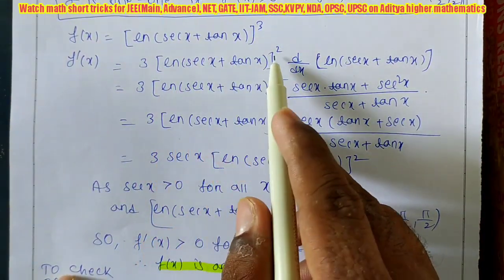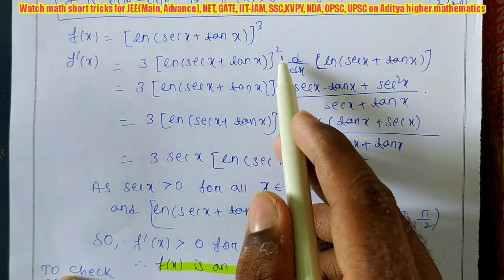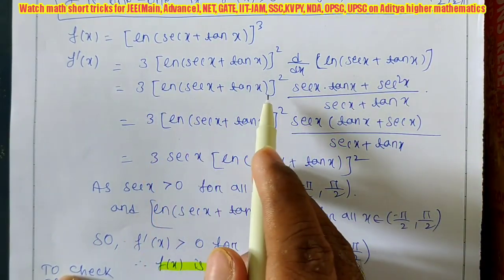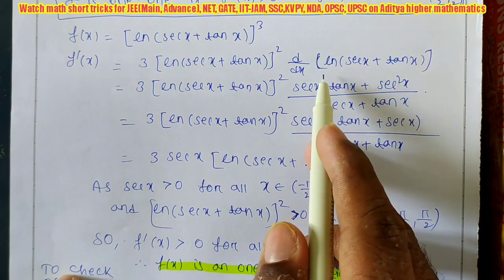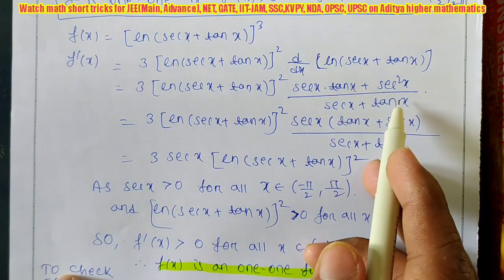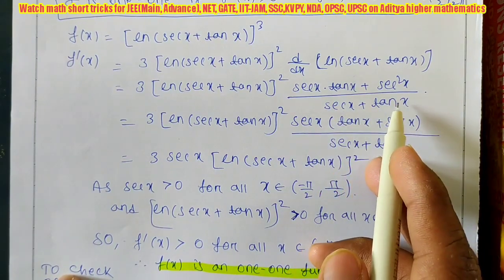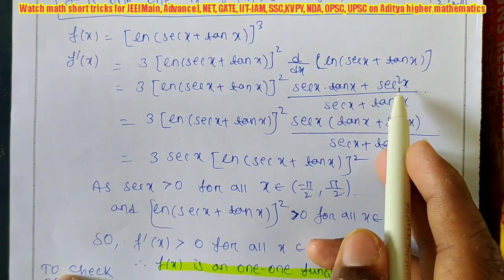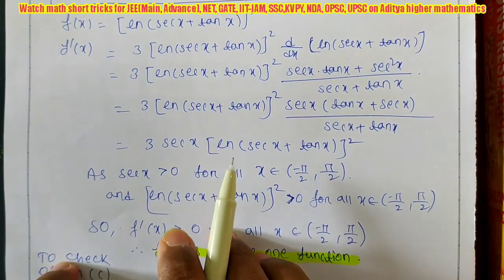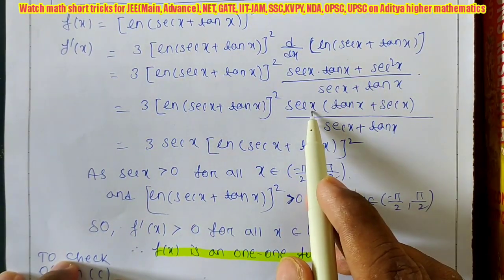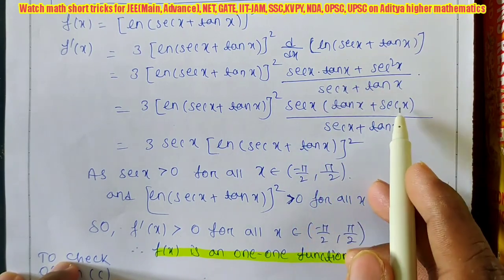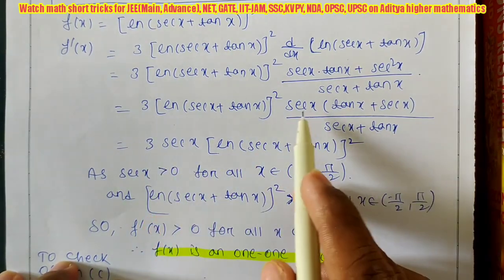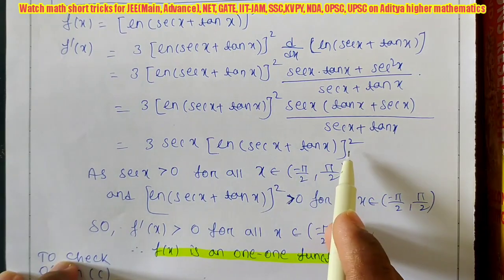f'(x) = 3·log(sec x + tan x)² · (1/(sec x + tan x)) · (sec x·tan x + sec²x). Using the power rule and chain rule: the derivative of log(sec x + tan x) is 1/(sec x + tan x), and the derivative of sec x + tan x is sec x·tan x + sec²x. Taking sec x common gives sec x(tan x + sec x). The (sec x + tan x) cancels, leaving f'(x) = 3·sec x·log(sec x + tan x)².